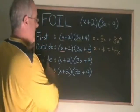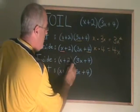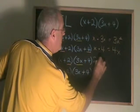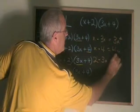The inside terms are the 2 and the 3x. 2 times 3x equals 6x.